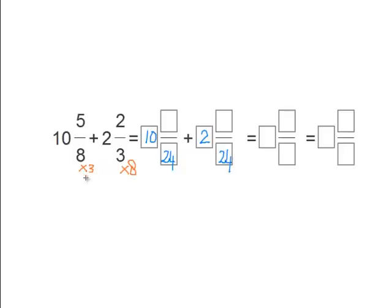Since we multiplied on the bottom, we must multiply on the top. So 5 times 3 is 15, and 2 times 8 is 16.